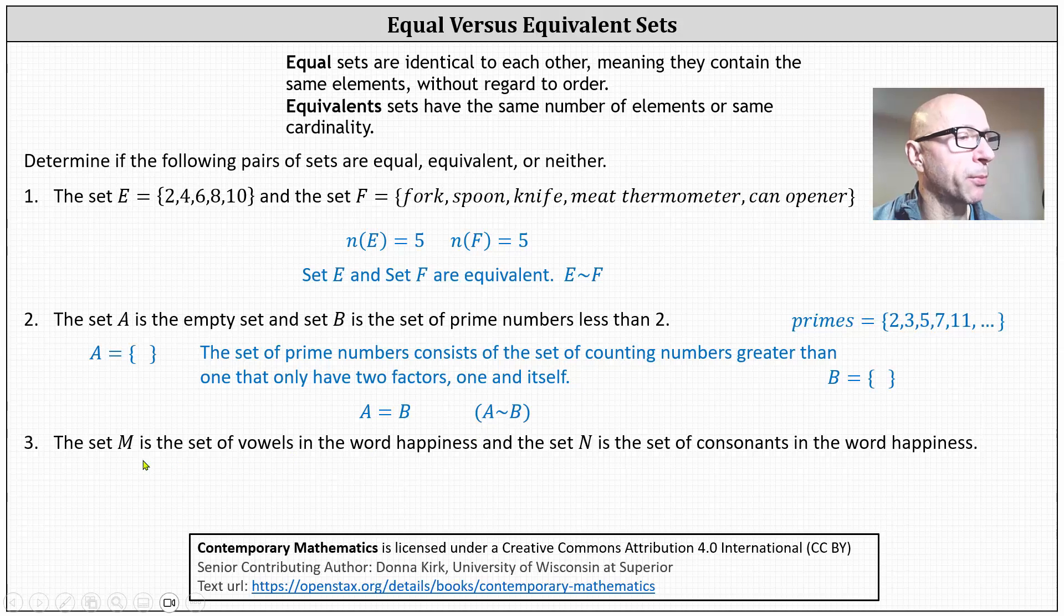And finally, for number three, the set M is a set of vowels in the word happiness. And the set N is a set of consonants in the word happiness. So let's analyze the word happiness. Recall the vowels are A, E, I, O, and U, and sometimes Y. In this case, the vowels are A, I, and E. This indicates that set M contains three elements, the elements A, E, and I. Notice the cardinality of set M is three.